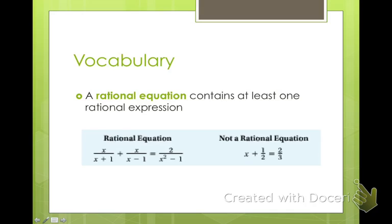So here's your vocab, you only have one word. A rational equation contains at least one rational expression. So if you look at this one, the one on the left is a rational equation because it has x variable in the numerator and the denominator and an equal sign. The one on the right, even though it has fractions in it, it's not a rational equation because there's no x values in the numerator or the denominator.